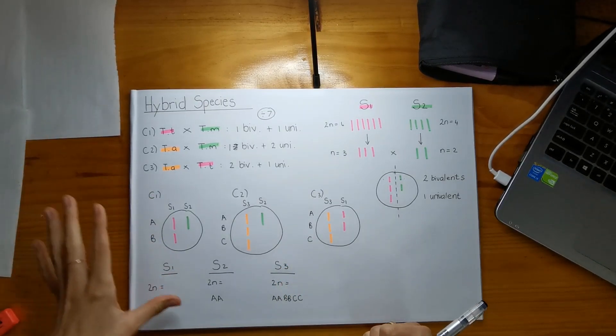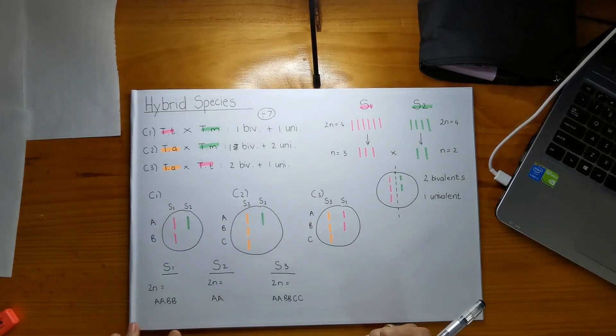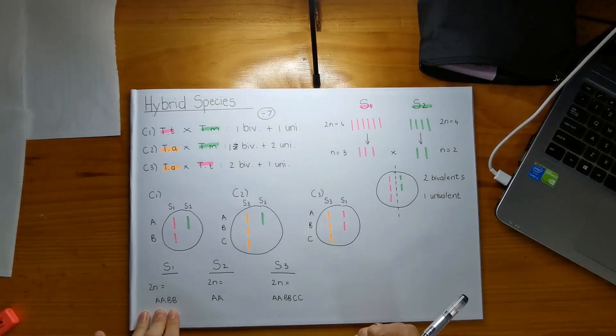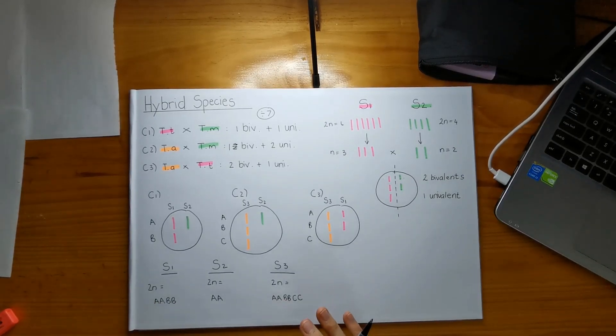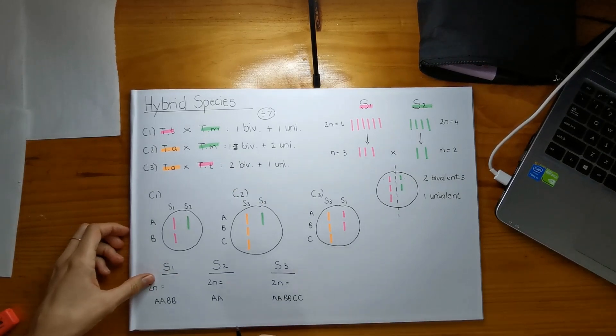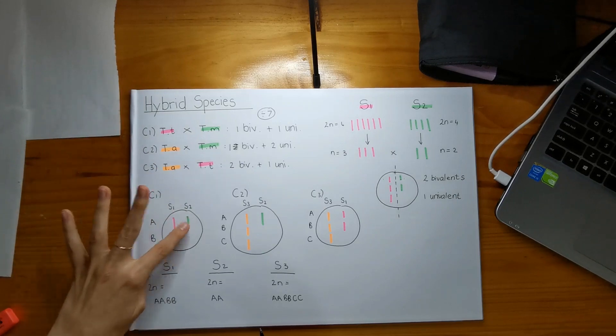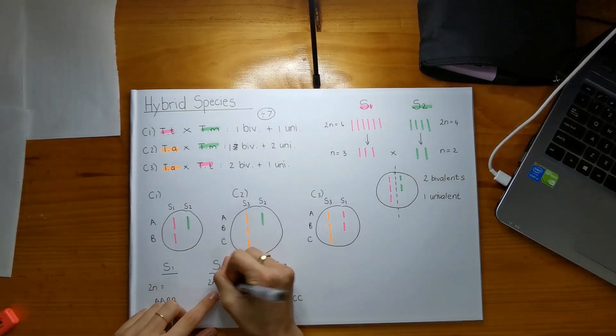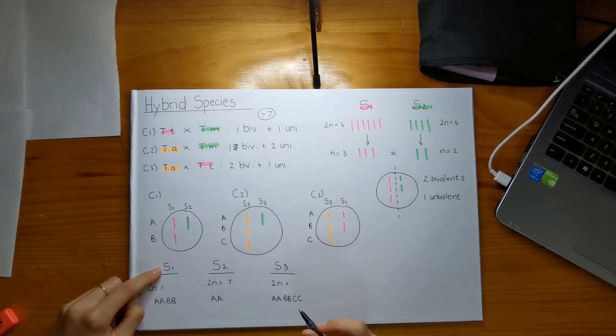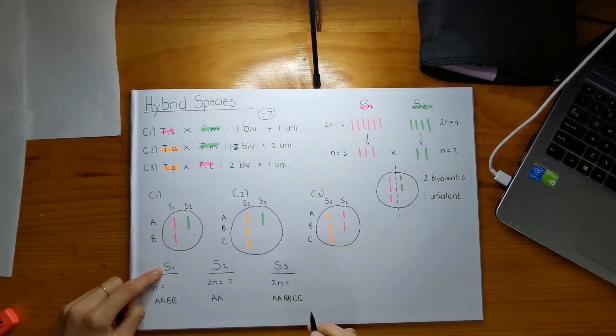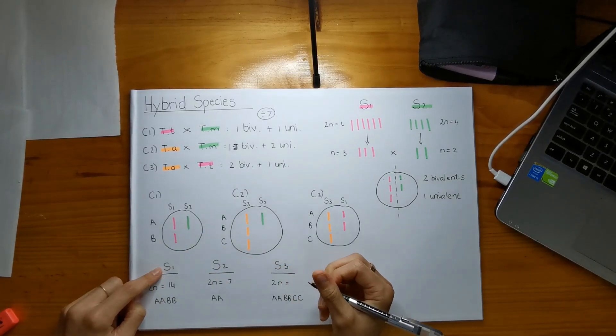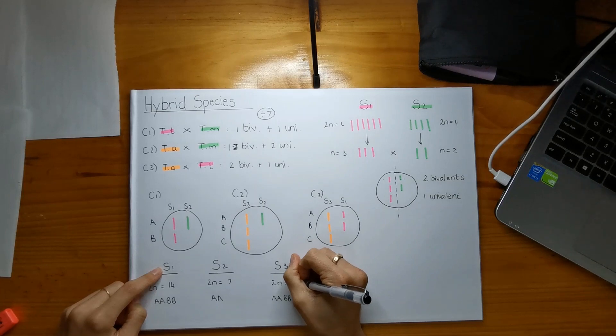All right, and working out their somatic number, we know that TM, which is species two has seven, we know that species one, which is TT, has 14, and we know that species three has 21.